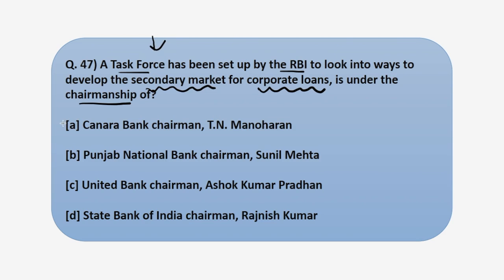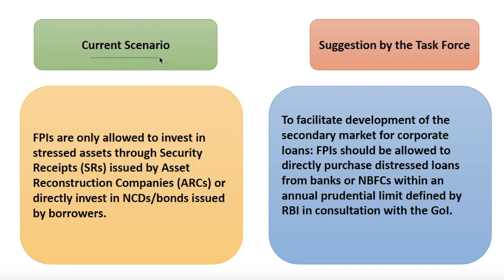The answer is Chairman of Canara Bank, TN Manoharan. So option A is the correct answer. Now let's look at some of the suggestions made by this task force. What is the current scenario? FPIs are only allowed to invest in stressed assets through security receipts issued by ARCs or directly invest in NCDs or bonds issued by the borrowers. Let's quickly see how this ARC works.